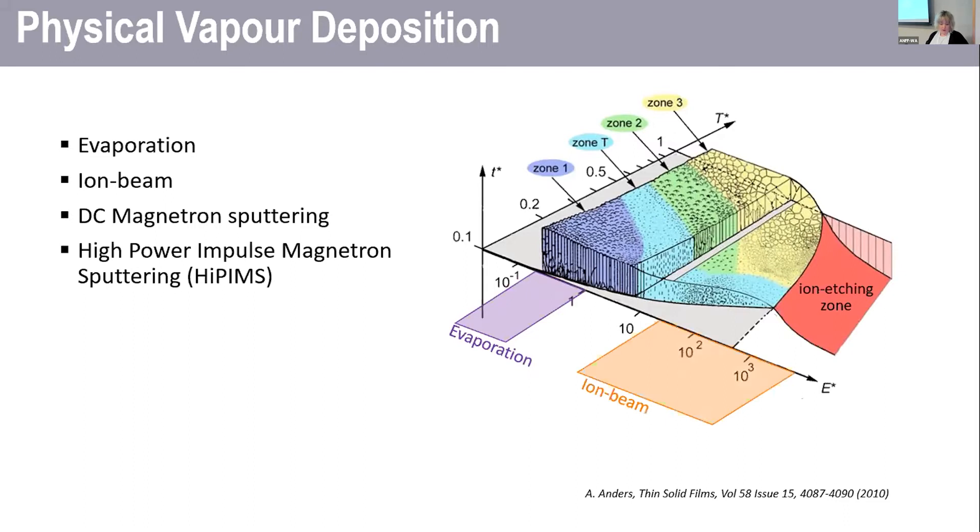Ion beam deposition is good for higher energy deposition, but it's typically only really useful in a small scale, and you don't really access that lower energy.